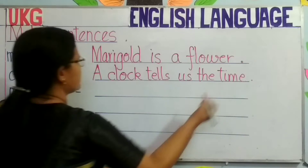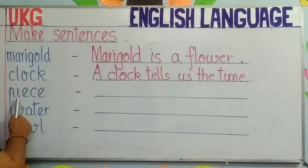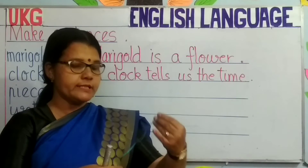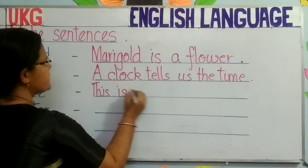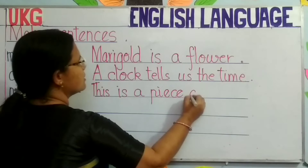The next word: piece. What is peace? A bit of any object is a piece. So this is a piece of string. You can write: This is a piece of string. Use a full stop at the end.